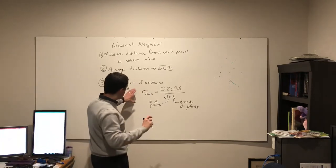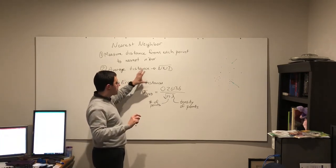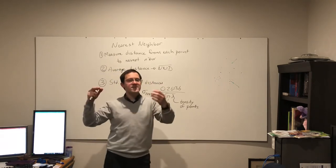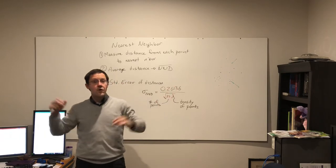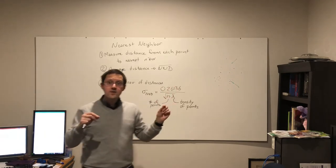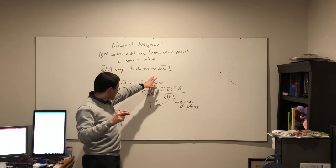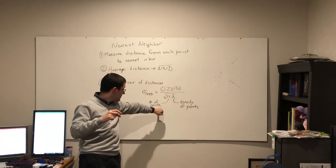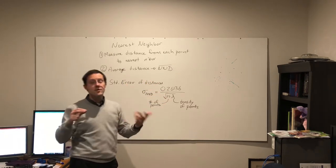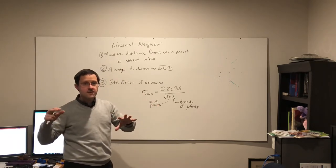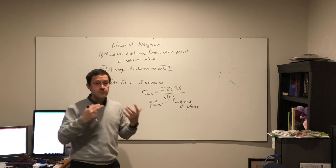And this, along with this average, we can use that to basically find our null distribution. We know if, based upon the nearest neighbor distance, the number of points, the density of points, we can get a good sense of what that ought to be under complete spatial randomness.